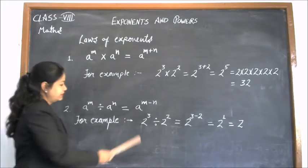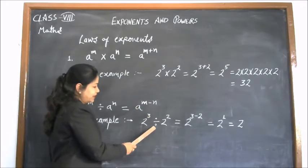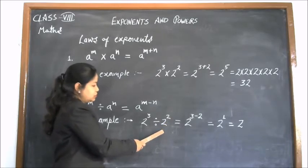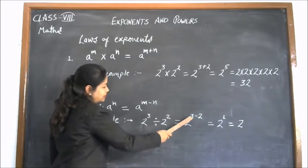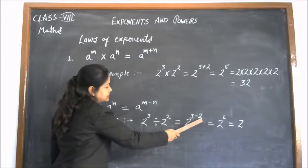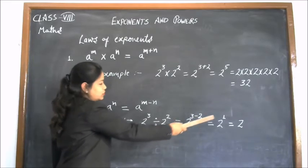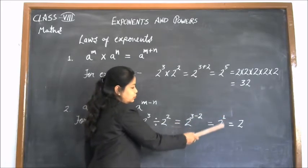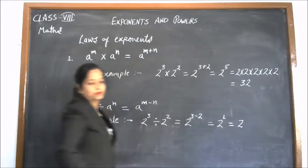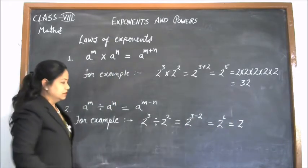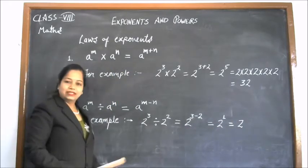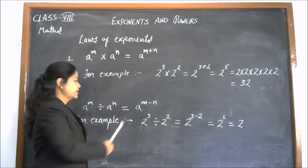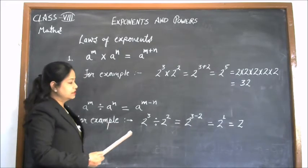For example, we have 2 to the power 3 divided by 2 to the power 2. So it will become 2 to the power 3 minus 2. And 3 minus 2 is 1, so it will become 2 to the power 1. 2 to the power 1 is 2. So students, we can see how easily the laws of exponents help us solve these problems.